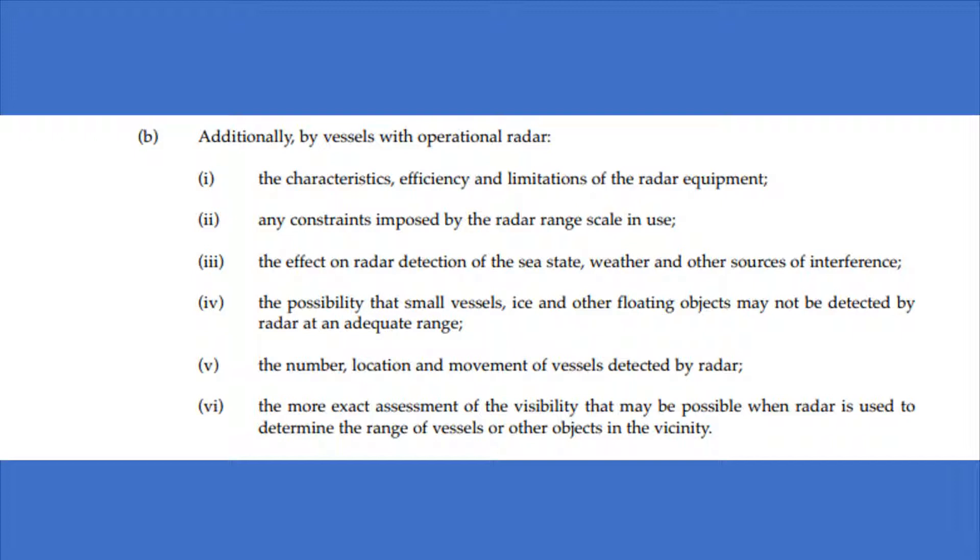Any constraints imposed by the radar range scale in use. So, if we have our radar range scale set to 6 miles, we're not going to get notified of vessels or targets that are within 12 miles. Therefore, we may have to go slower because we're looking at a much narrower field of view.